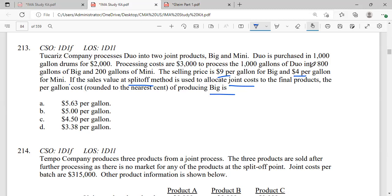Let us just take this: we have 800 gallons and 200 gallons. Selling price is $9 per gallon and $4 per gallon. So the total becomes 800 into 9 equals 7,200.